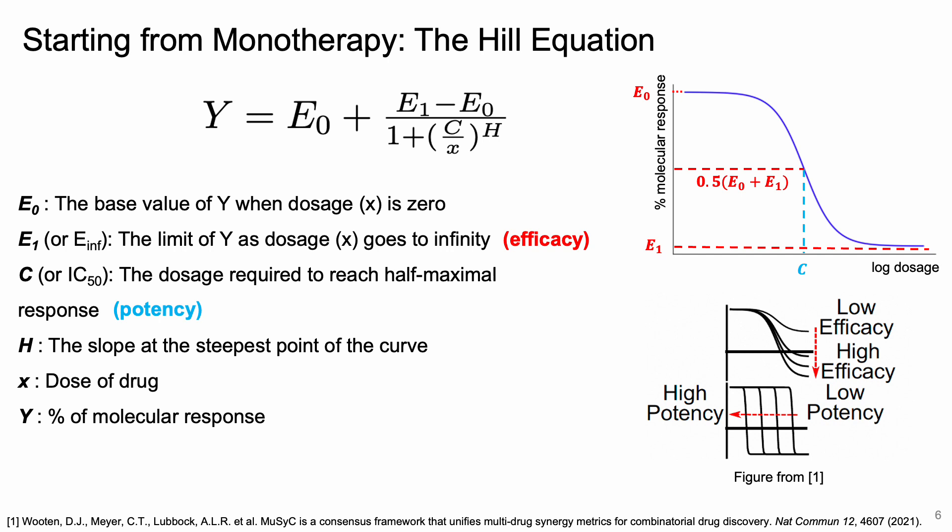To introduce the model, we start from monotherapy and build our model based on the Hill equation, which is the classical sigmoidal equation that models the relationship between logarithmic dosage and response. The parameter E infinity quantifies the efficacy of the monotherapy, whereas the parameter C, or IC50, quantifies the potency or sensitivity of the monotherapy. These are the quantities used by biologists for subsequent analysis of the drug.